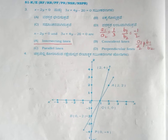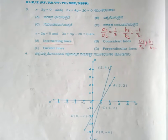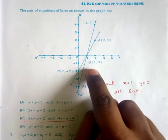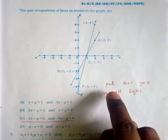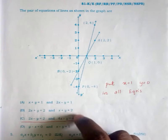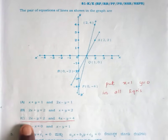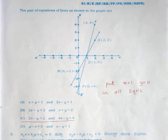For question 3, the answer is option A, intersecting lines, because it satisfies the condition A1 by A2 is not equal to B1 by B2. For question number 4, many of you might have made a mistake because two lines are intersecting at point Q. We should check for which equation it satisfies, that is x equals 1 and y equals 0. It satisfies for option D: 2x minus y equals 2 and 4x minus y equals 4.